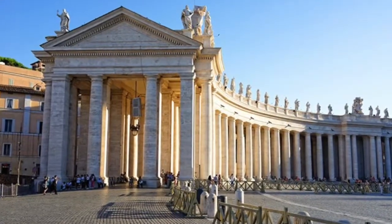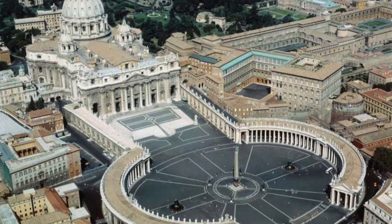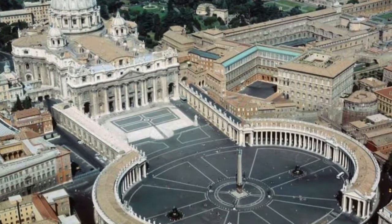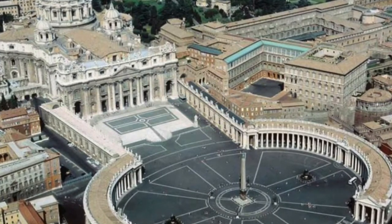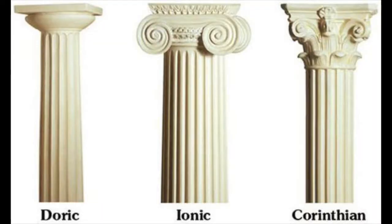Bernini's design incorporates two colonnades — a colonnade being a group of columns that creates almost like a walkway. He creates these two oval-shaped colonnades, each with a series of four columns repeated, giving three archways between them. These columns are all Doric in design. You may remember from Greek architecture that you get Doric, Ionic, and later the Romans introduced Corinthian columns as well, which are much more ornate and elaborate.